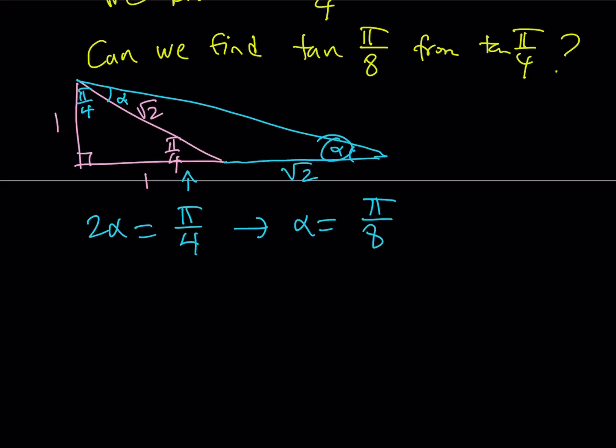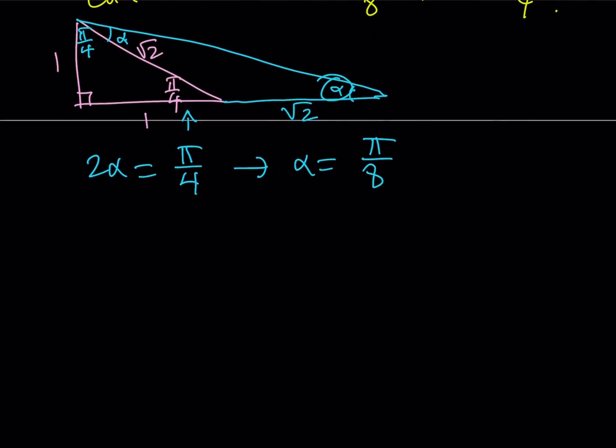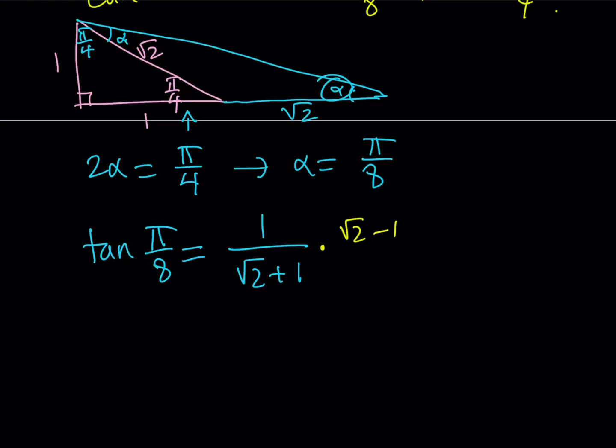So this angle right here is pi over 8, and I do need the tangent of it. So I do need to know what tangent pi over 8 is, at least with the first method. So how am I going to find it? By using the definition of tangent. Tangent is opposite over adjacent. Therefore, it's going to be 1 over root 2 plus 1. I wanted to write the radical first because I'm going to rationalize the denominator. Tangent pi over 8 is root 2 minus 1 divided by 2 minus 1, which is 1. So the answer is root 2 minus 1.